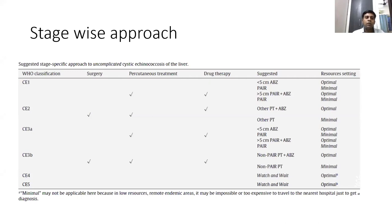Based on the WHO stage: CE4 and CE5 (non-viable/calcified) — wait and watch; CE1 — medical management, with PAIR added for larger cysts; CE2 and CE3 — usually surgery; PAIR can be offered for CE1, CE2, and CE3 with specific case selection criteria.